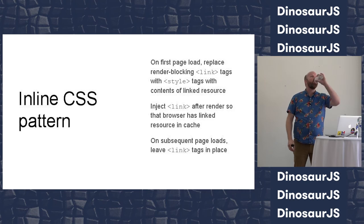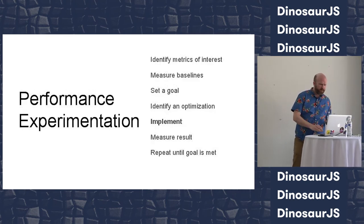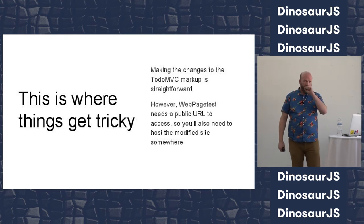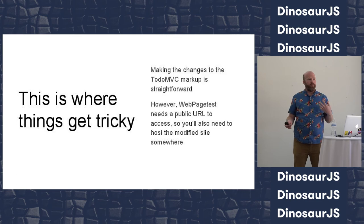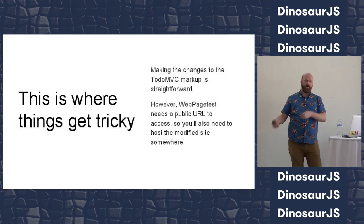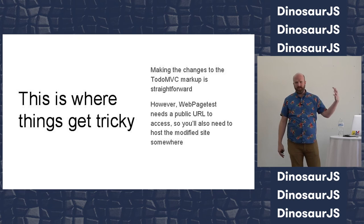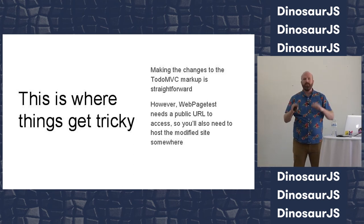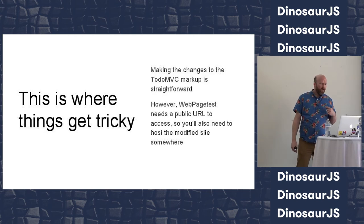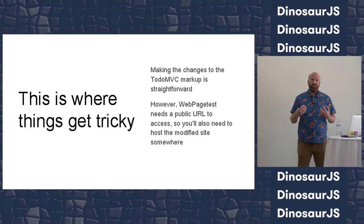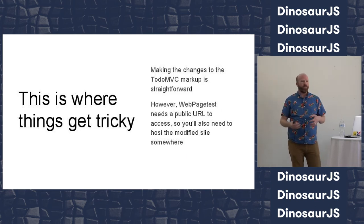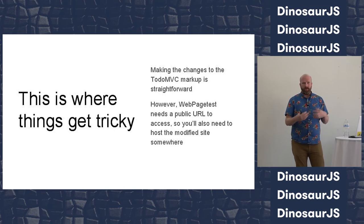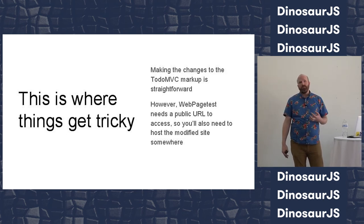So we're going to implement this, but this is where things get tricky. It's pretty straightforward to do in the React TodoMVC codebase — you just find the CSS file and paste it in. But now at a minimum you have to host it somewhere because WebPageTest can't hit a URL on your laptop. More importantly, on a production website this could be really complicated — multiple teams, a build system, styles you don't control. If you're trying to figure out quickly whether this will be a win, you really want something simpler.